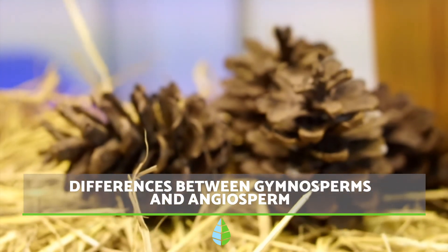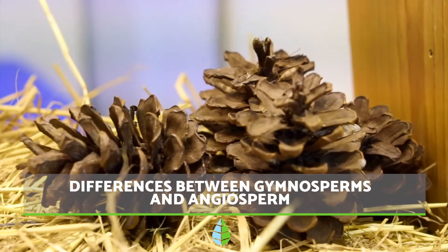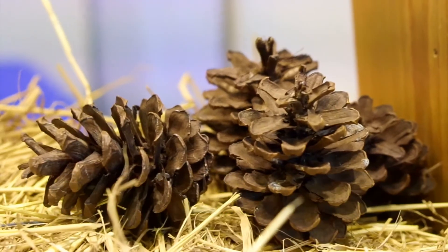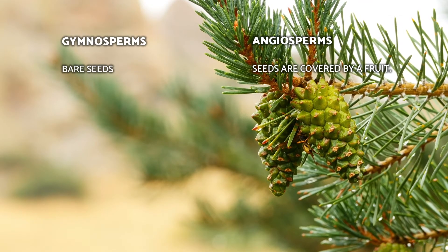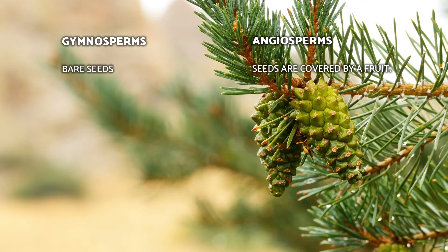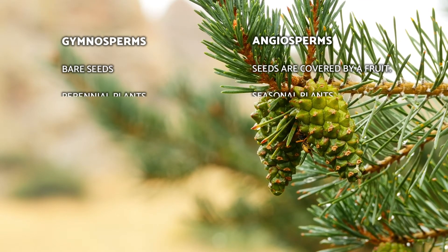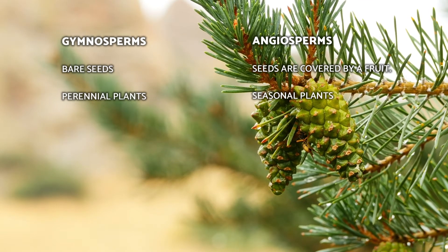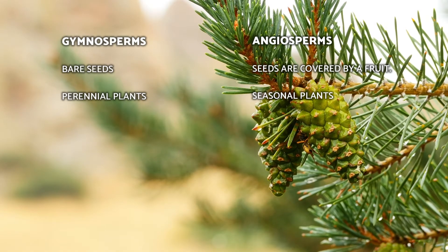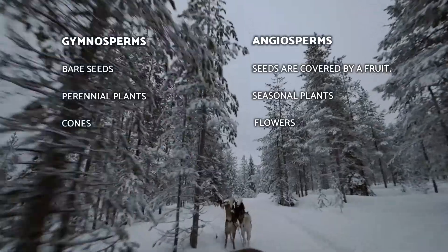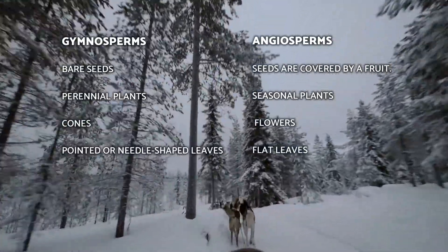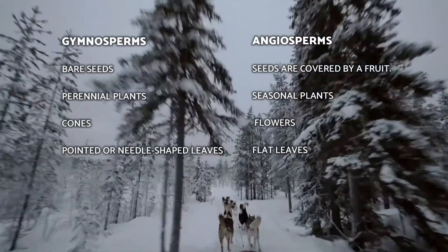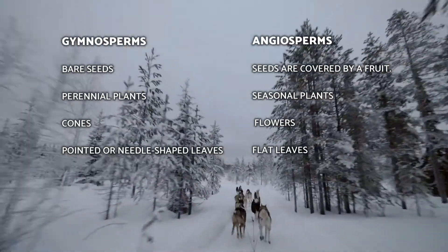Differences between gymnosperms and angiosperms: as mentioned before, gymnosperms bear seeds while the seeds of angiosperms are covered by a fruit. Gymnosperms are usually perennial plants, while angiosperms are usually seasonal. While gymnosperms have cones, angiosperms typically have flowers. Unlike gymnosperm leaves, which are usually pointy and needle-shaped, angiosperms' leaves are usually flat.